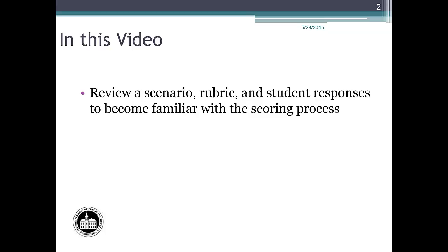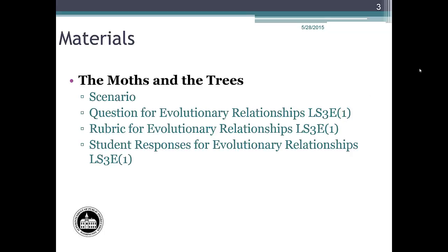The goal is to determine the score — 1 or 0 — for each response. You should have on hand the Maws and the Trees scenario, a copy of the Evolutionary Relationships question from the COE sample task, the rubric for the question, and the student responses for the question. Please refer to these documents throughout the presentation.